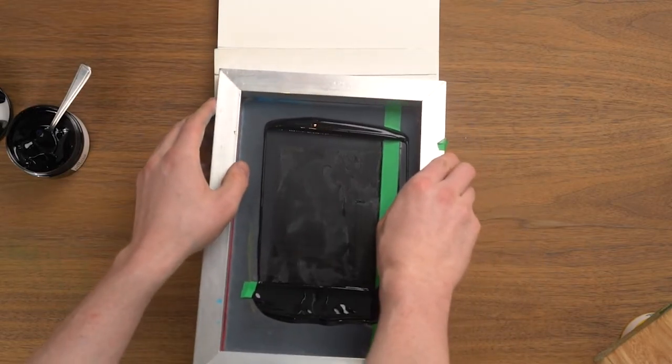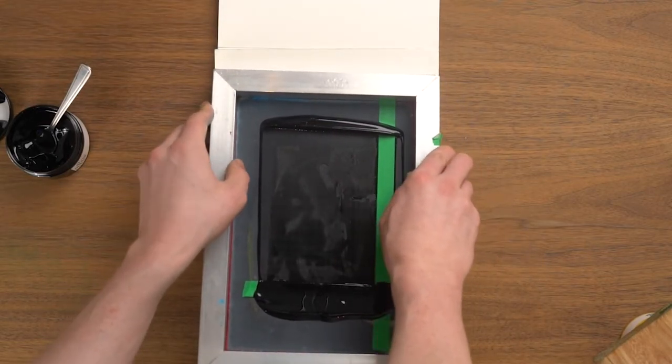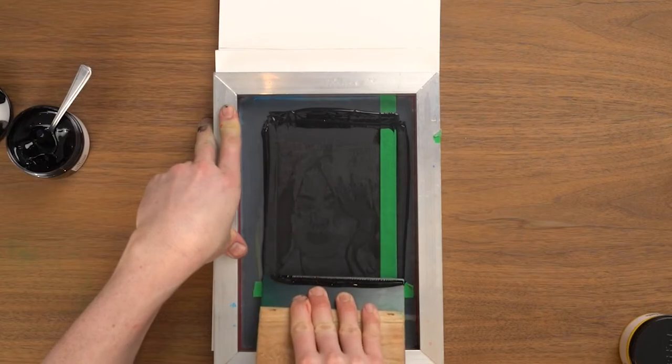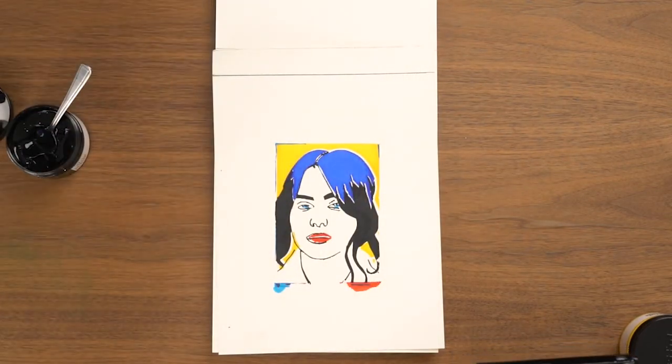Flip your screen again on top of our yellow, red, dark blue and light blue paint. And pull the black paint towards yourself in one smooth motion. And there, we're finished.